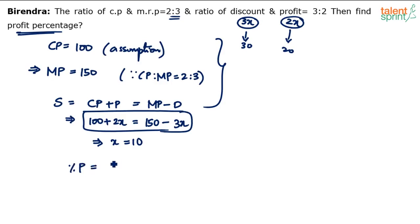What is percentage profit? Profit upon cost price. Profit is how much? 20. Cost price how much? 100. Into 100. You don't have to write this step also. Just by looking at profit 20 and cost price 100, you should know that the profit percentage is 20. 20 rupees profit on 100 rupees investment, so 20 percent is the final answer.